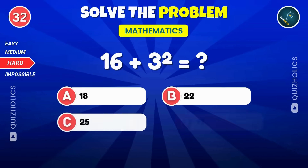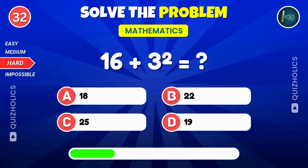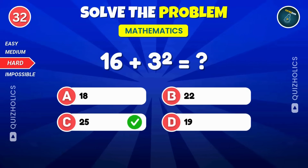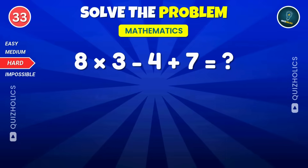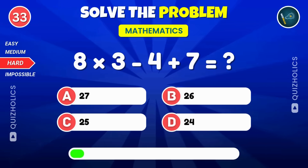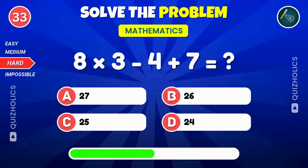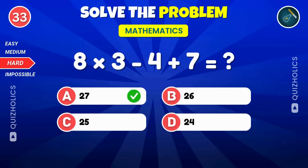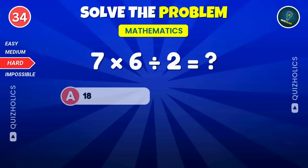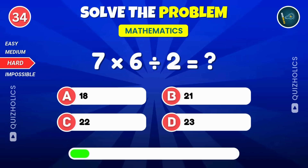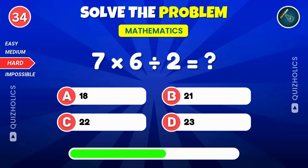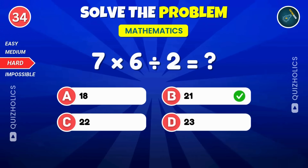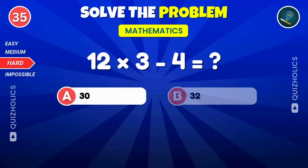What's 16 plus 3 squared? Solve 8 times 3, subtract 4, and add 7. Find the result of 7 times 6 divided by 2. What is 12 times 3 minus 4?